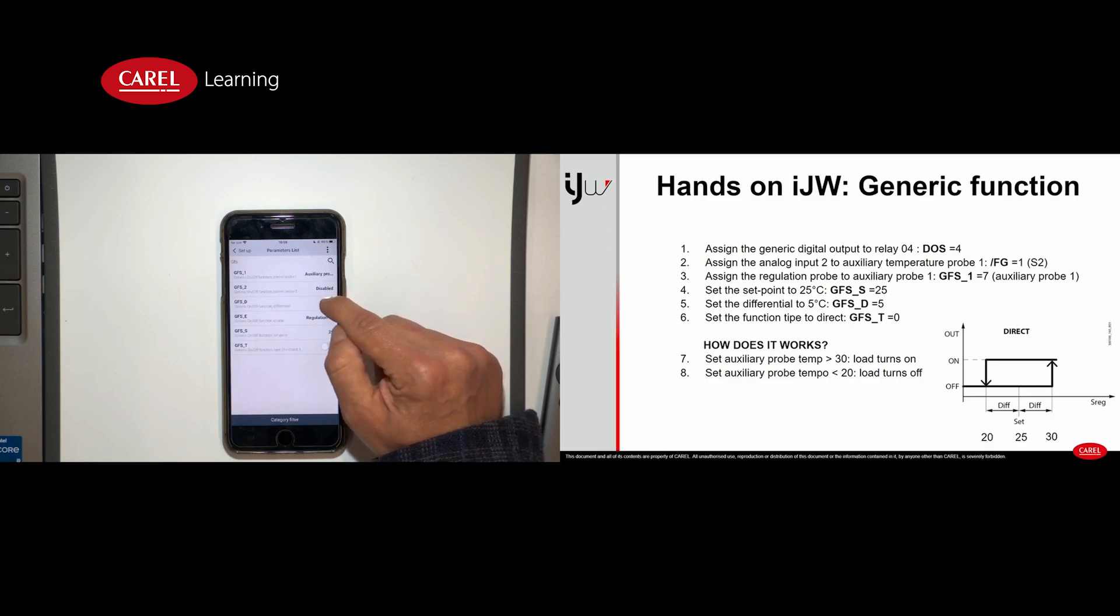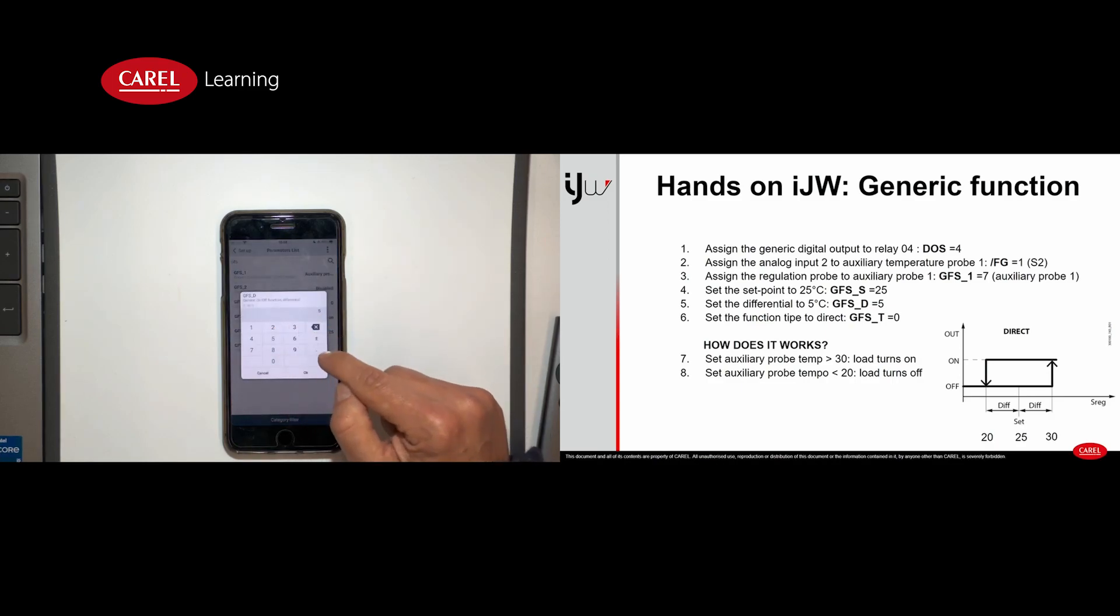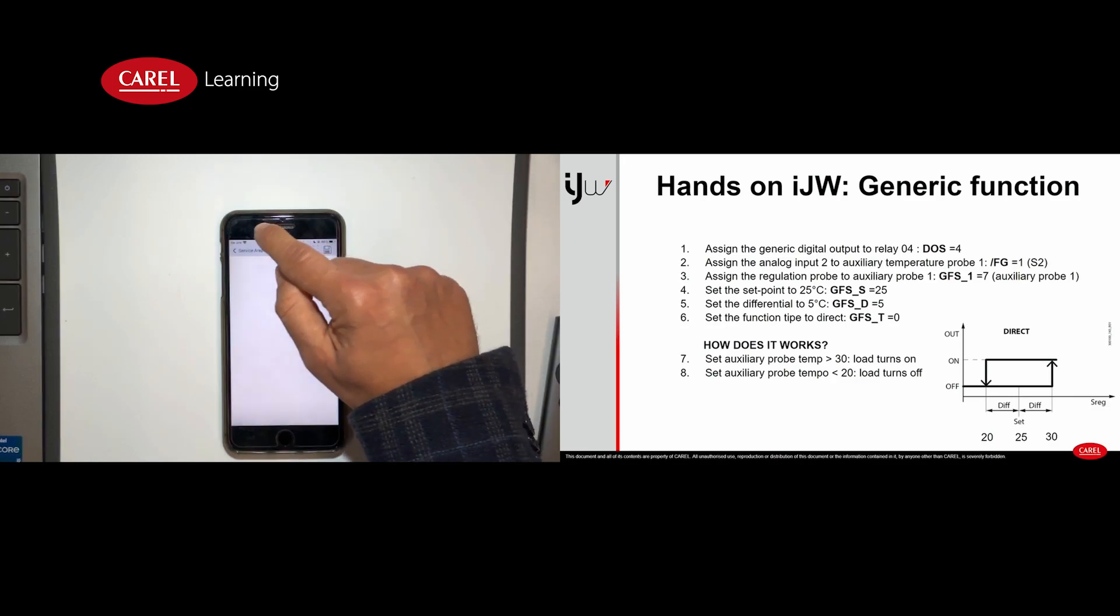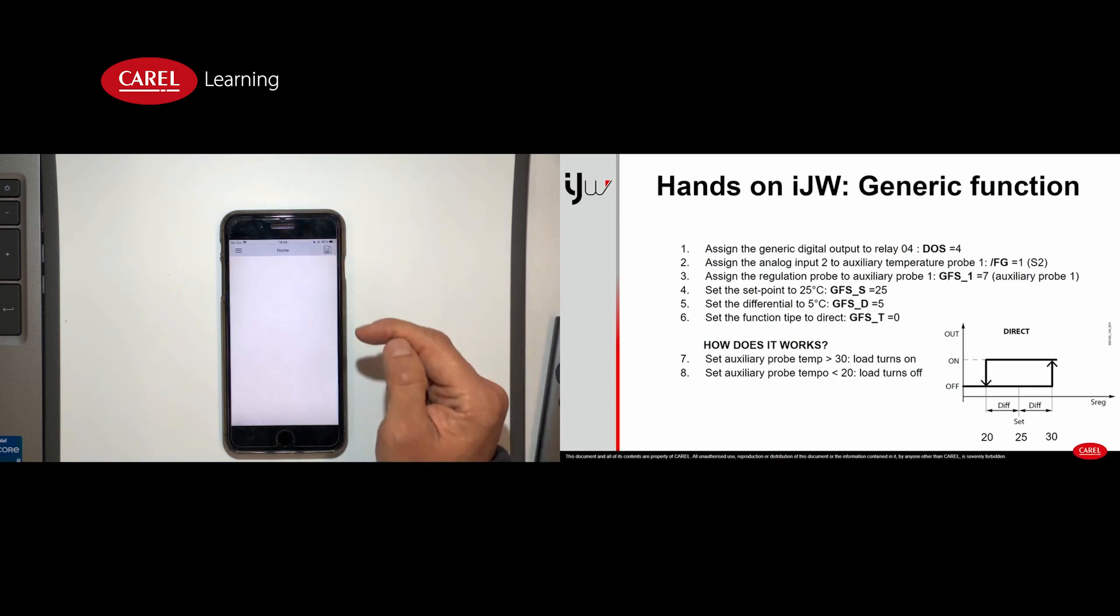The parameter is GFSD. And finally we can choose the logic of the control if direct or reverse. With zero we keep the direct logic. Okay, now we can go back to the control.